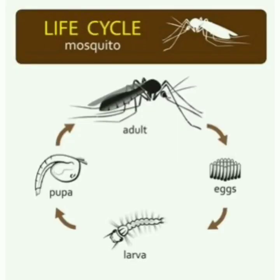This is the life cycle of a mosquito. An adult mosquito lays eggs in the water. The eggs become larva. Larva becomes pupa and pupa becomes an adult mosquito.